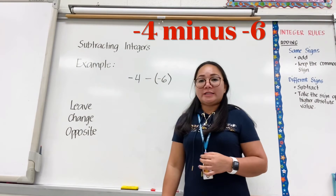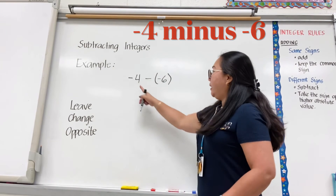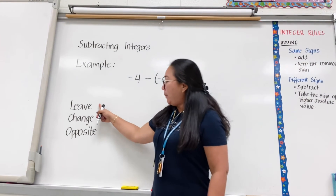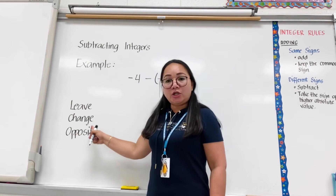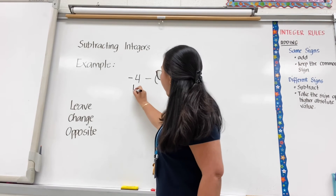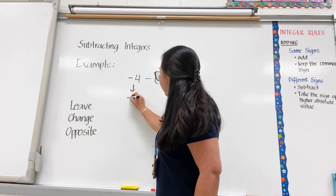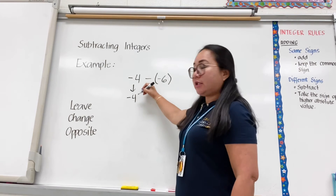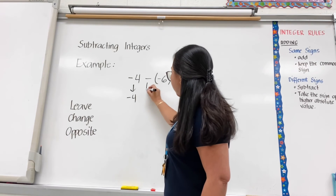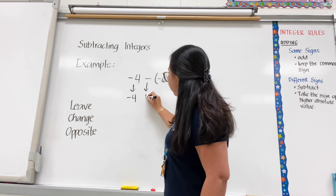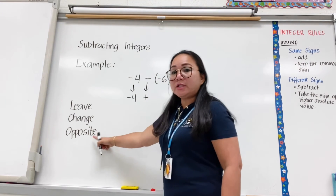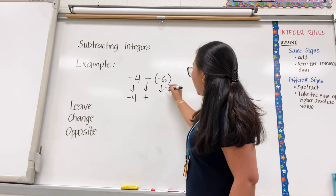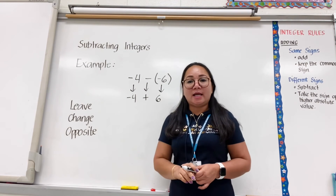Another example: negative 4 minus negative 6. Applying Leave, Change, Opposite — leave negative 4, change the subtraction sign to addition sign, and get the opposite of negative 6, which is positive 6.